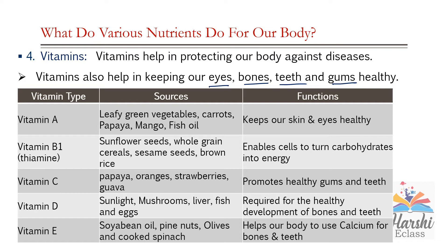Coming to vitamin B complex, we will discuss vitamin B1 and B2. Vitamin B1 is also called thiamine. It is rich in sunflower seeds, whole grain cereals, sesame seeds, and brown rice. The main function of vitamin B1 is that it enables cells to turn carbohydrates into energy — thiamine helps in converting carbohydrates into energy. Vitamin B2 is also called riboflavin, and it is rich in almonds, asparagus, and bananas. The main function of vitamin B2 is that it maintains body growth and red blood cell production.